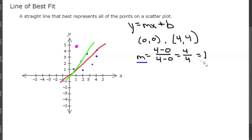So my slope would be 1 and my y intercept, when my x value is 0, my y value is also 0. So my b will be equal to 0.